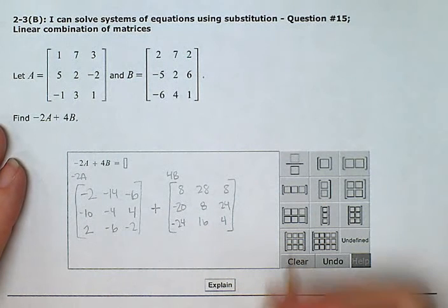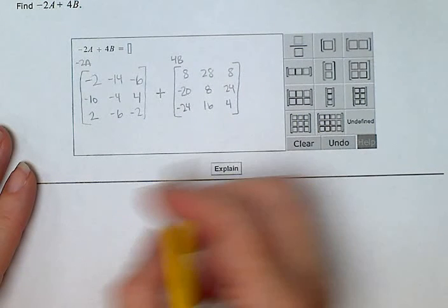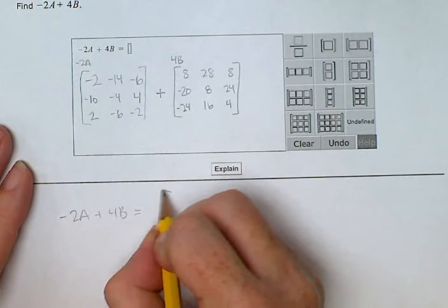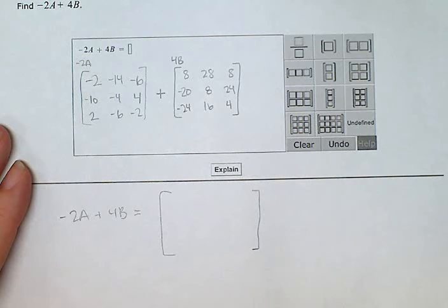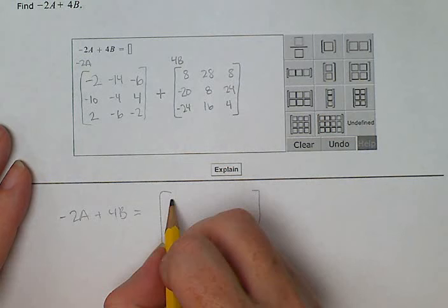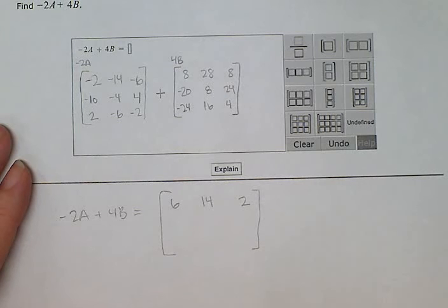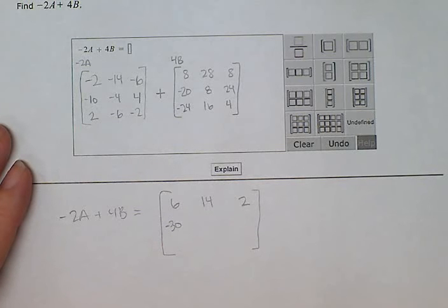So I'm going to write that down here a little further. I need more room. So -2A + 4B equals the matrix: -2 + 8 gives me 6, -14 + 28 is a positive 14, -6 + 8 is a positive 2. Second row: -10 + -20 is -30, -4 + 8 is a positive 4.